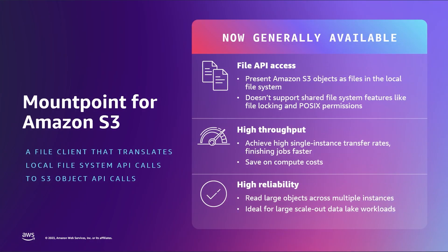Mountpoint for Amazon S3 is a new open source file client that makes it easy for Linux-based applications to connect directly to Amazon S3 buckets and access objects using file APIs. Using Mountpoint for Amazon S3, you can mount your Amazon S3 bucket on your compute instance, and it presents S3 objects as files in the local file system. It translates local file system API calls to REST API calls on Amazon S3 objects.